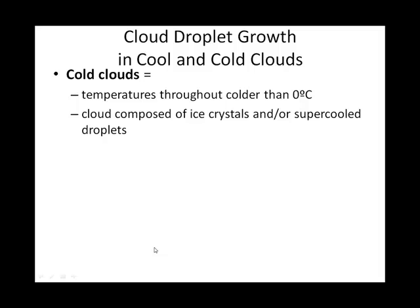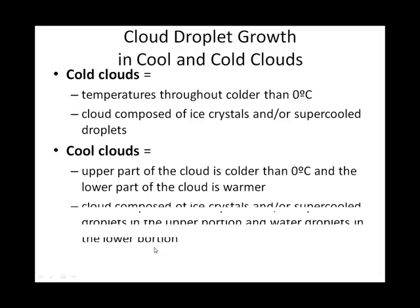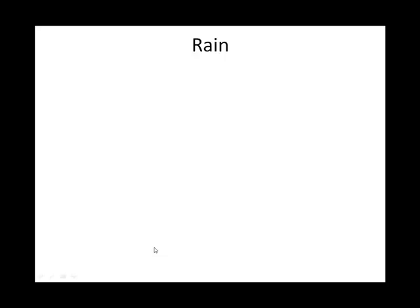To summarize the difference between cloud types: a cold cloud has the Bergeron process going on throughout because it's cold enough to maintain ice in its solid state. A cool cloud has the Bergeron process at the top, but the ice liquefies before it falls from the base of the cloud, so the collision-coalescence process also plays a role. A warm cloud relies entirely on the collision-coalescence process.